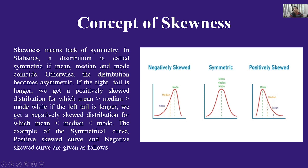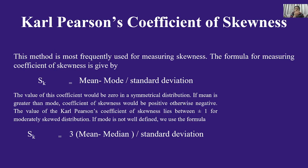Carl Pearson's Coefficient of Skewness: if you know mean, median, or mode and standard deviation, you can calculate skewness. Skewness = (Mean − Mode) / Standard Deviation. The value of this coefficient would be zero in a symmetrical distribution. If the mean is greater than mode, the coefficient of skewness is positive; otherwise negative. Carl Pearson's range for this coefficient is plus or minus 1.